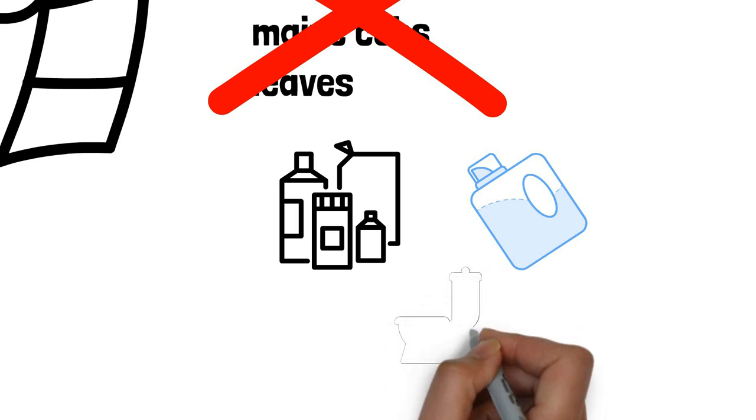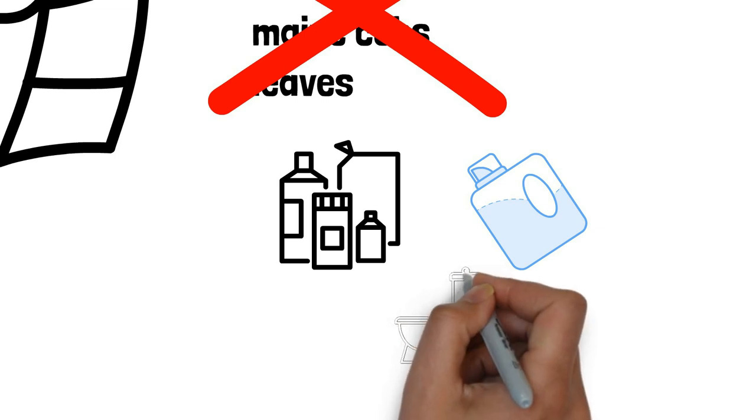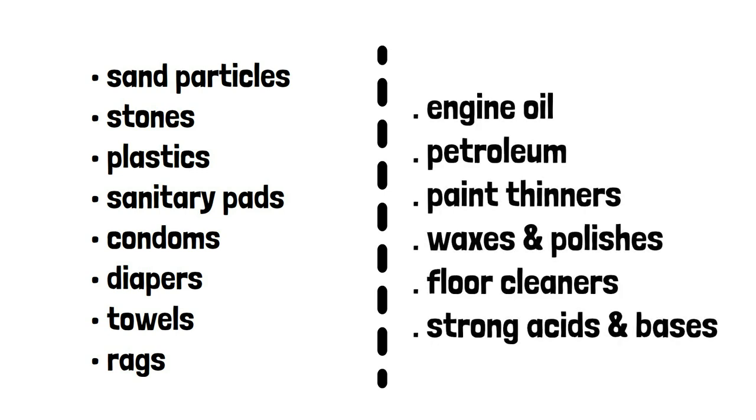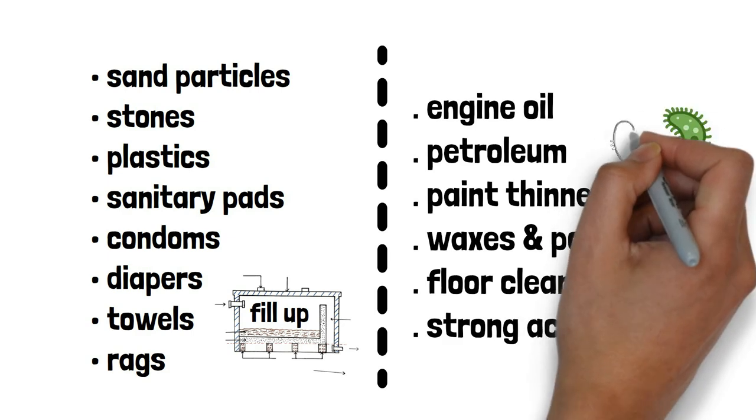The flush water will dilute the chemicals as they flow into the biodigester. On the left are the solids you should not put into your biodigester, and on the right are the chemicals. These solids won't be digested by the organisms, making your biodigester fill up quickly. On the other hand, the chemicals will kill the organisms, compromising the efficiency of your biodigester.